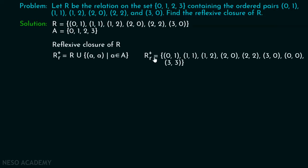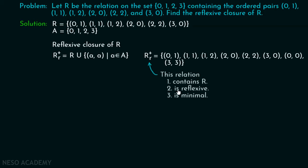Here is how the result looks like. R⁺ includes all ordered pairs of R: (0,1), (1,1), (1,2), (2,0), (2,2), (3,0). You can clearly see that we have (1,1) and (2,2) in this relation, but we do not have (0,0) and (3,3). So we must include (0,0) and (3,3) in order to make this relation reflexive. Although you can add more elements, that will not be a minimal relation. We are interested in finding the smallest reflexive relation that contains R. This relation contains R, this relation is reflexive, and this relation is minimal. We have (0,0), (1,1), (2,2), and (3,3) — all these ordered pairs within the reflexive closure. Apart from this, it contains all the elements of R, and this relation is as small as possible. Therefore, this relation is the reflexive closure of R.